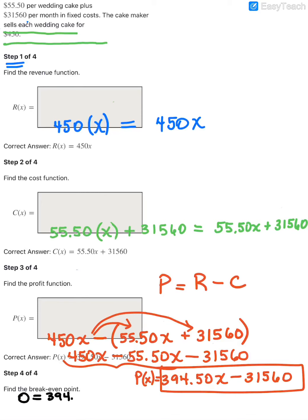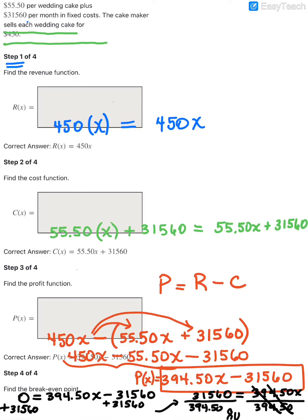If we take our 394.50 times x and we subtract the 31,560, then we'll solve that equation. So I'm going to add the 31,560 to both sides. That leaves me with 31,560 equals 394.50 times x, and then to get x by itself we're going to divide both sides by 394.50 and you can punch that out on a calculator. When I punch it out, I get a nice even number, and it won't always be even in the real world, but in this case we got a nice even 80.